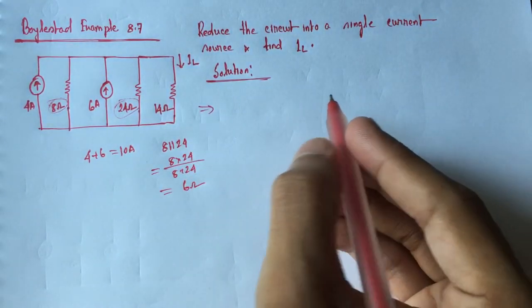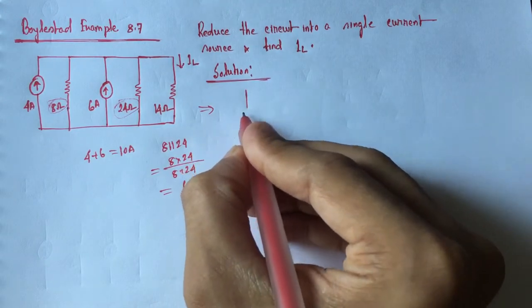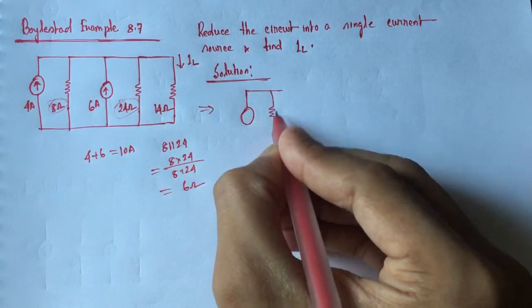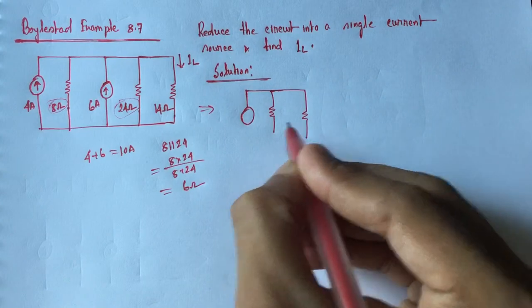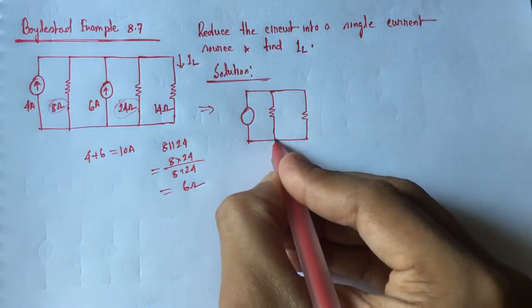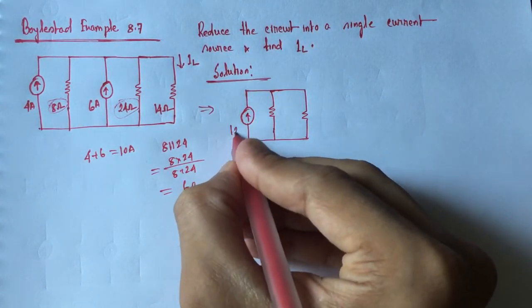Now, if we redraw the circuit, it will become a current source. This is the current source which is 10 ampere.